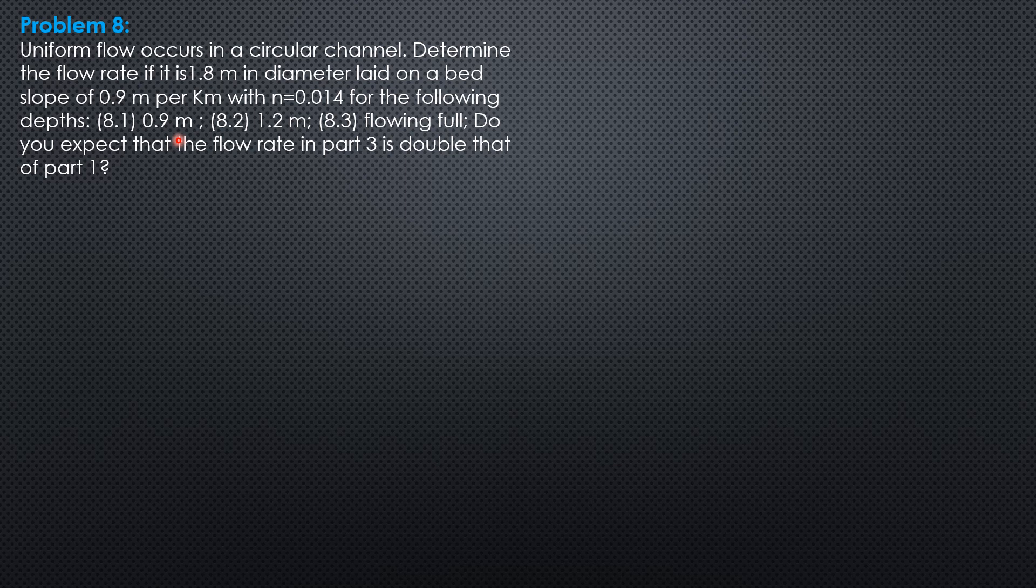First, 0.9 meters, or half flow, so semicircular sections. Second, 1.2 meters. Then flowing full. Do you expect that the flow rate in part 2 is double that of part 1?